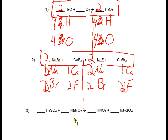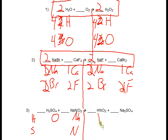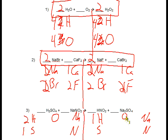Number three, our last one. We have a lot of elements here, so let's just write down the elements: hydrogen, sulfur, oxygen, sodium, nitrogen. Now we're going to count how many atoms we have of each element. Hydrogen: two on the left, one on the right. Sulfur: one on the left, one on the right. Oxygen: four plus two is six on the left, and two plus four is six on the right also. Sodium: one on the left, two on the right. Nitrogen: one on the left and one on the right.